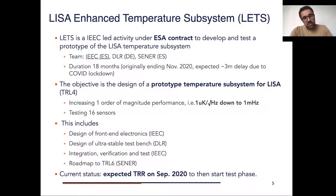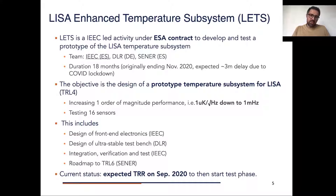The objective is that the prototype has to reach a performance of one micro Kelvin per root Hertz down to one millihertz. We will be testing around 16 sensors, and the activity includes the development of a front-end, the development of a stable test bench, integration, verification and test of everything, and designing a roadmap to reach TRL 6.